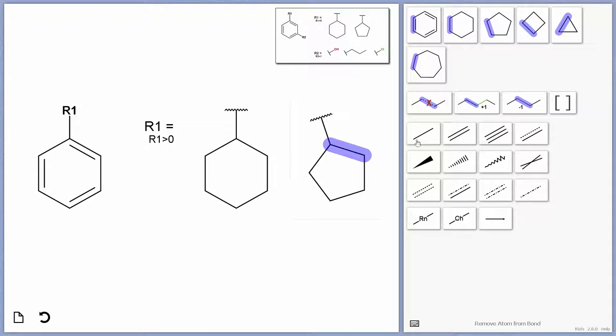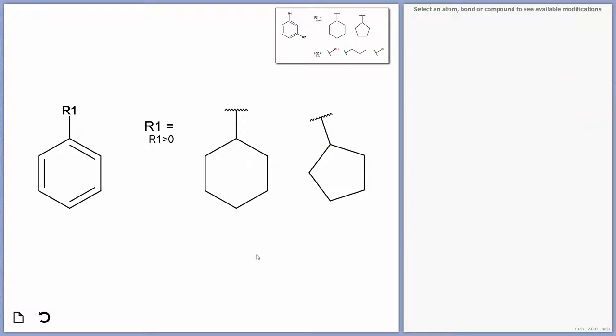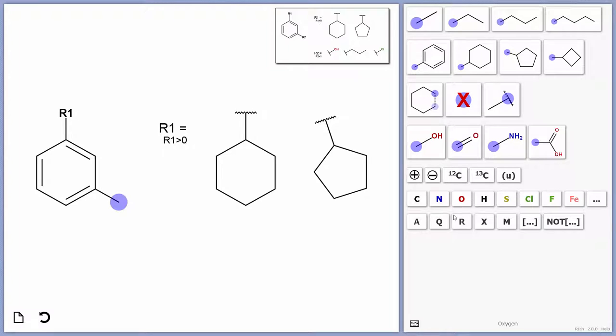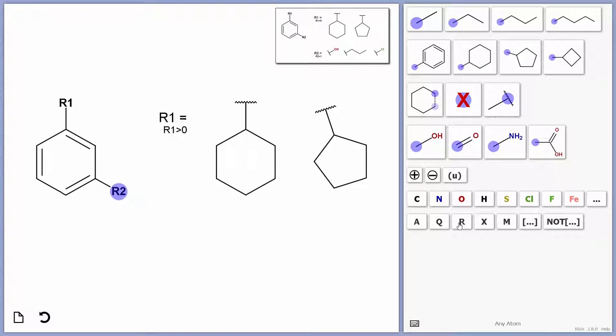This is really useful when users draw a side chain to the wrong length, or they draw a ring to the wrong size. It can be quickly adjusted. Then, it's just a case of repeating the same for the R2 group.